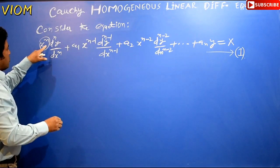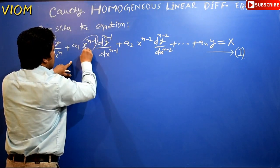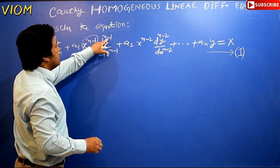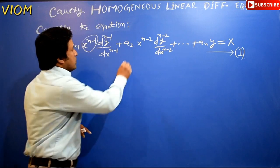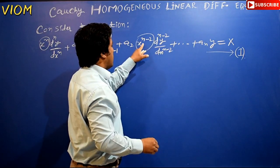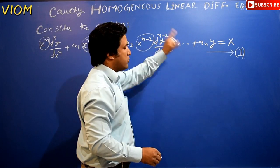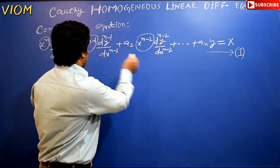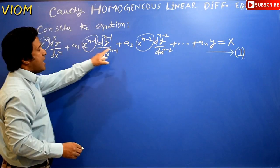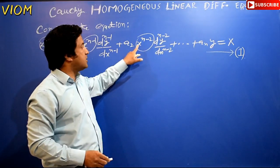Looking at this differential equation, in front of the nth-order differential coefficient we have x raised to the power n, in front of the (n-1)th differential coefficient we have x raised to the power (n-1), and similarly x raised to the power (n-2) and so on. In the differential coefficients, there is a variable x — not constants.